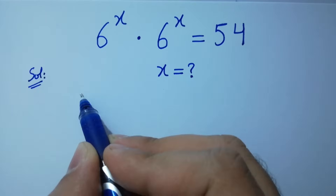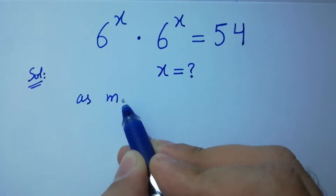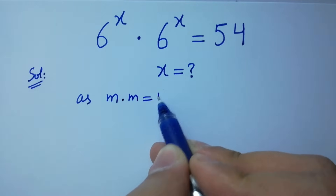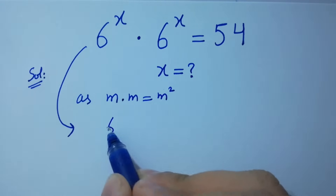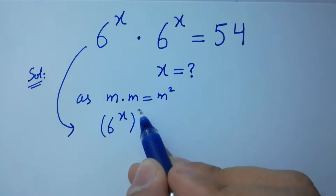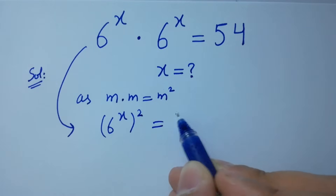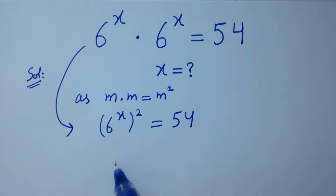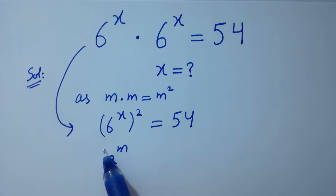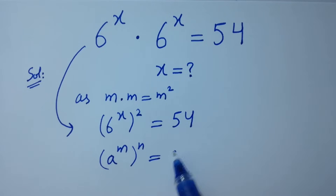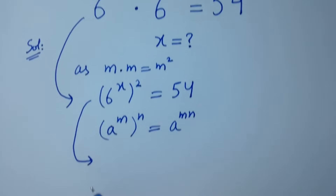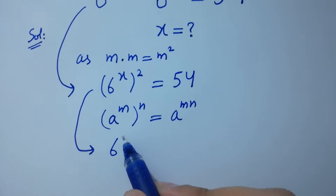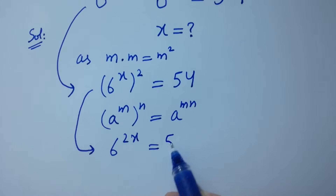As we know, m times m equals m squared. Then it will be 6 to the power x, to the whole power 2, equal to 54. Using the rule a to the power m, to the whole power n, equals a to the power m times n, we have 6 to the power 2x equal to 54.